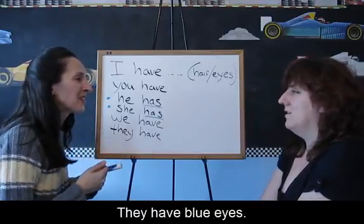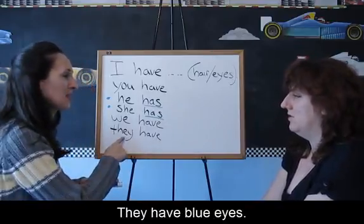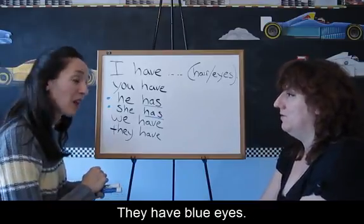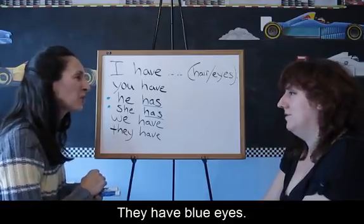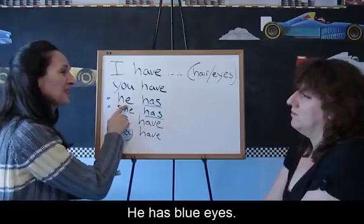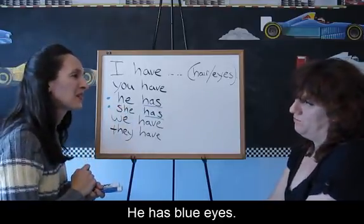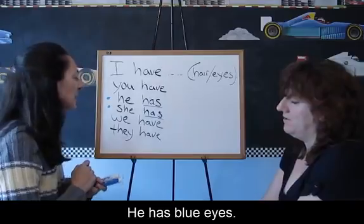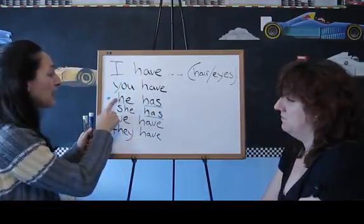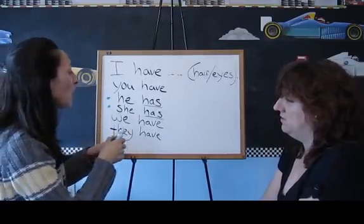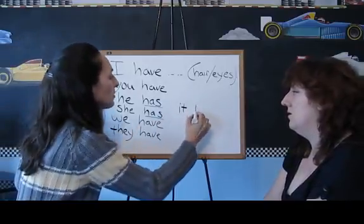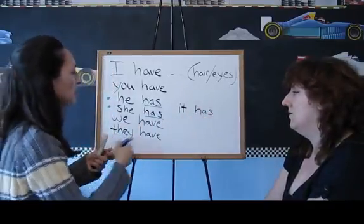What about their eyes? They have blue eyes. And your son? He has blue eyes. So watch the difference — it's usually have, have, have, but he and she, and also it, are going to be has, has, has.